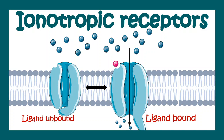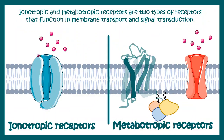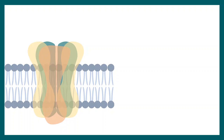In this video, we'll talk about ionotropic receptors. Ionotropic receptors are generally ligand-gated ion channels. That means in a ligand-bound state, they would conduct ions across these channels. In our nervous system, there are two types of receptors: ionotropic receptors and metabotropic receptors. Ionotropic receptors are ligand-gated ion channels, while metabotropic receptors are generally G-protein coupled receptors. They synthesize metabolites which lead to intracellular changes. In this video, we'll focus on ionotropic receptors and not on metabotropic receptors.